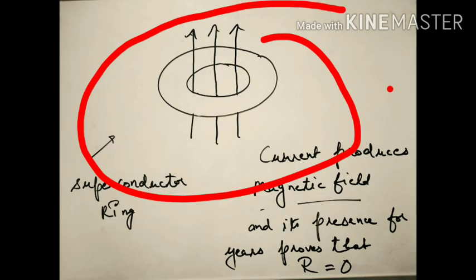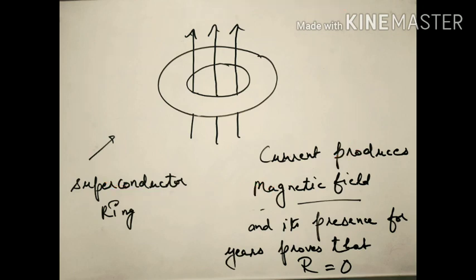If you take a superconductor ring and pass current through it, by Lenz's law a magnetic field will be set up. This magnetic field remains set up for years, and its presence for years proves that the resistance is zero. The current does not stop and the magnetic field persists for a very long time.